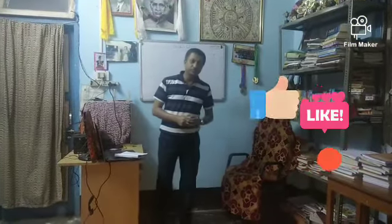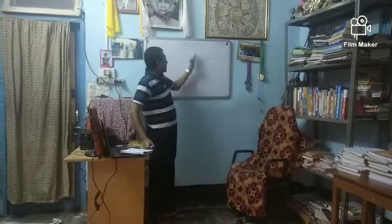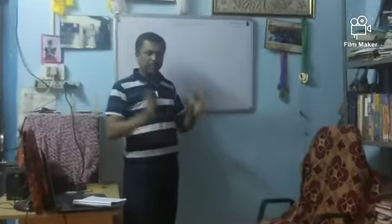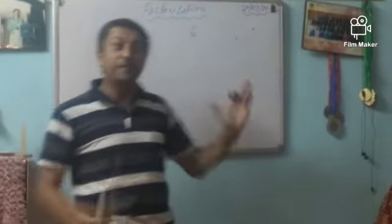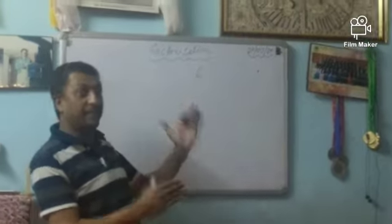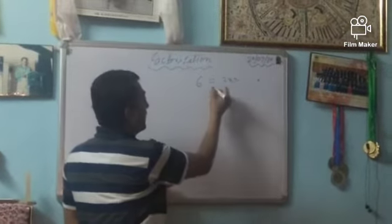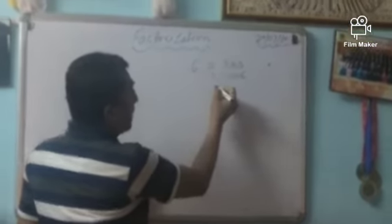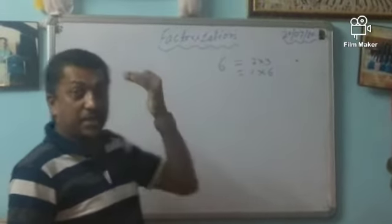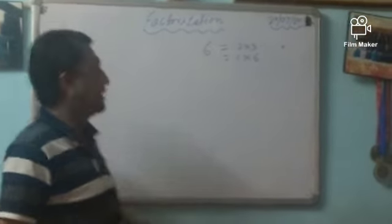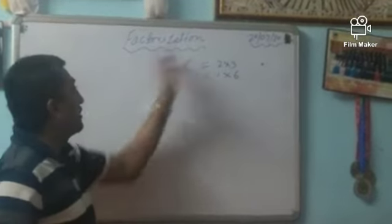Hello everyone, today we are going to start the very interesting and important topic called factorization. The very simple meaning — take the number six: we have to write it in such a way that when we multiply, it comes back to the same number. So, factors of six: six equals two times three, or one times six, or three times two. Similarly, if any algebraic expression or polynomial is there, we may find its factors.